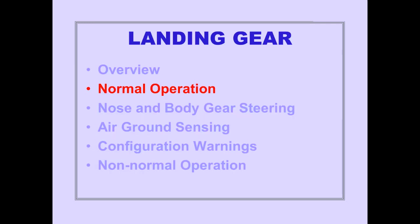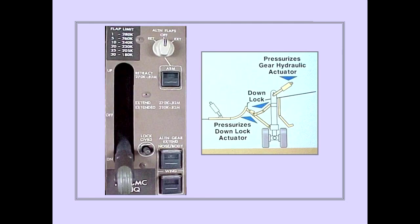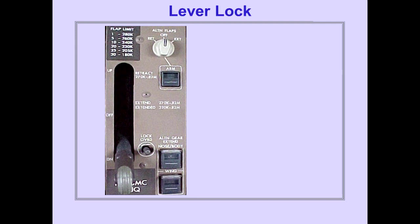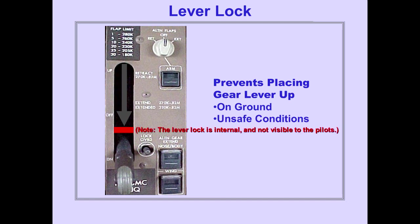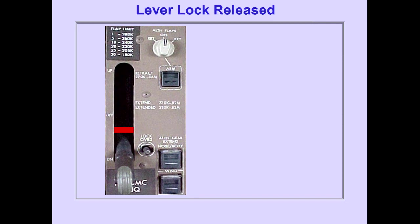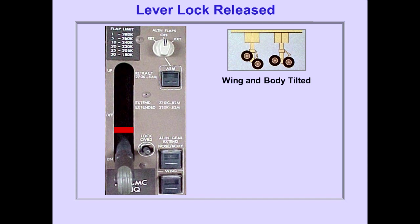Let's discuss normal landing gear operation. Gear lever down position pressurizes the down lock actuators, which locks the gear down and pressurizes the gear hydraulic actuators to the down position. The landing gear lever lock prevents placing the gear lever to the up position when on the ground or with unsafe conditions in flight. In flight, the gear lever lock is released when the wing and body gear are tilted and the body gear are centered.